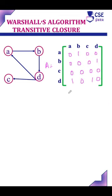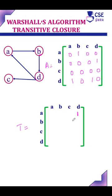Transitive closure means that even if there's no direct path from a to d, but there is a path through b, we can represent a to d as 1.